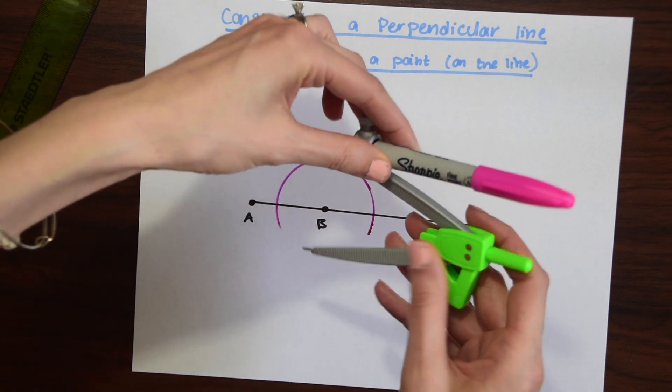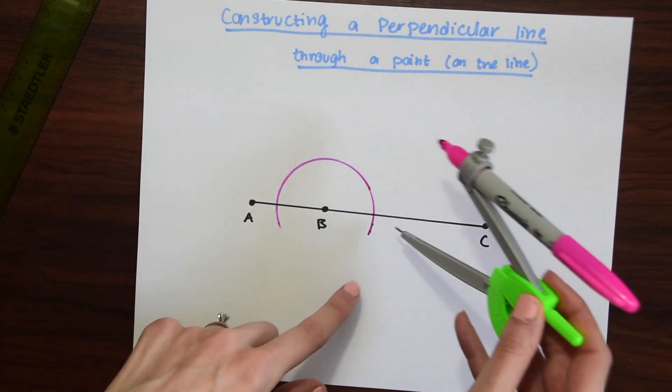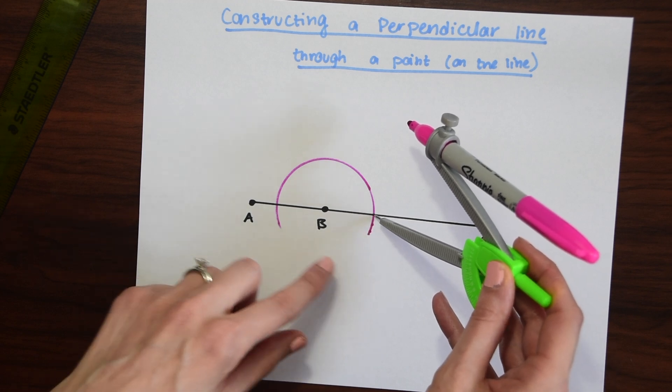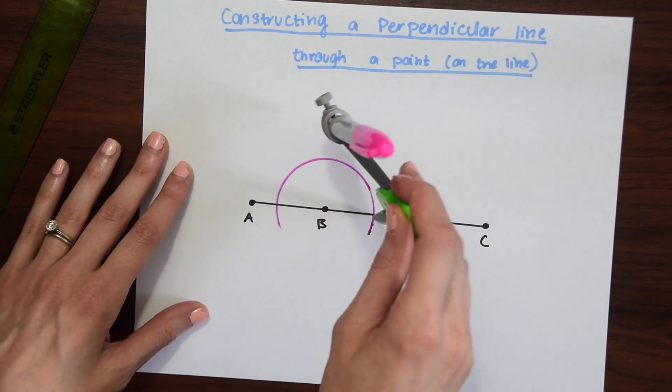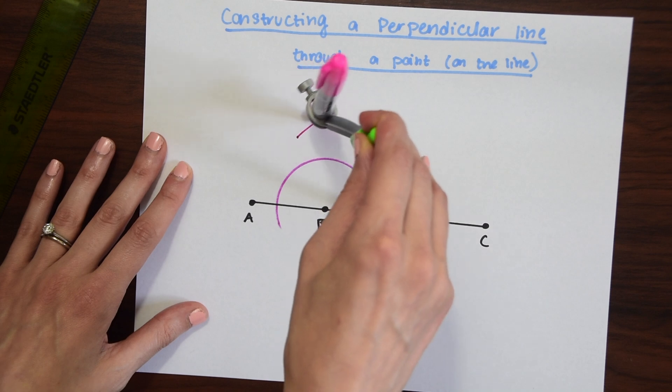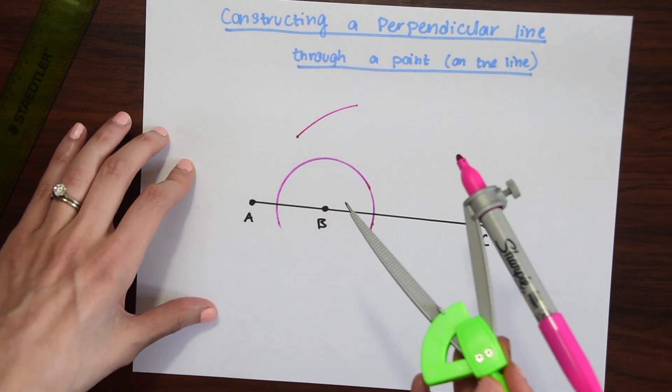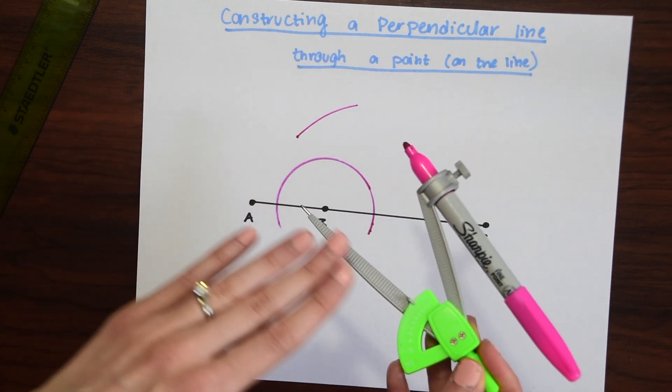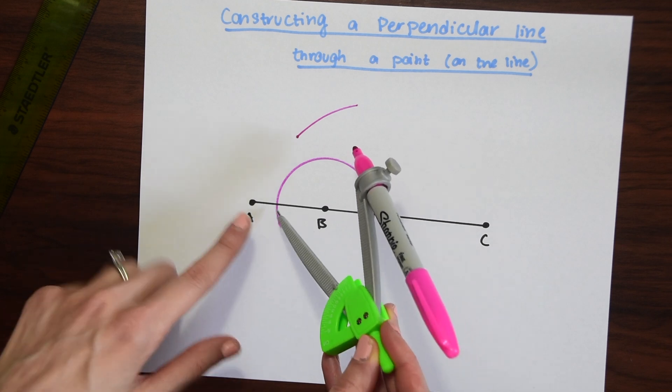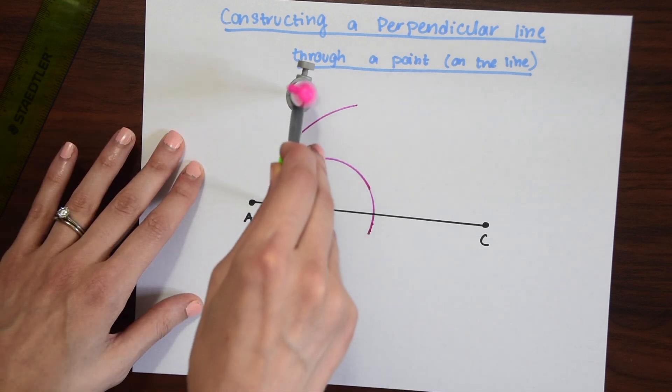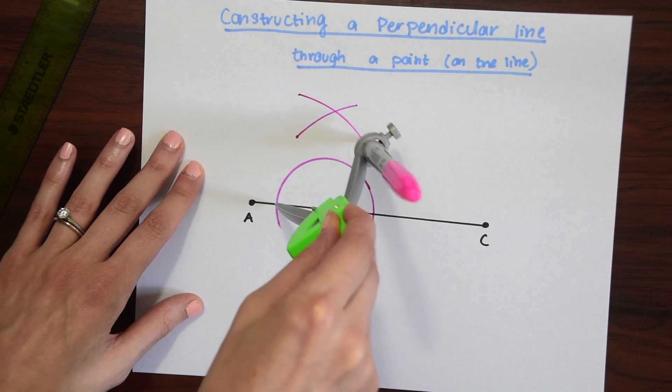Now we'll open up the compass a little bit more and take the point to the point of intersection of the line we just made and the original line and then make a little arc above the point. And we're going to do the same thing keeping the same distance, bringing the point to the other side and making a little arc.